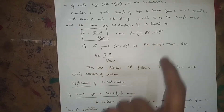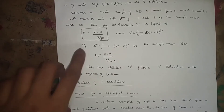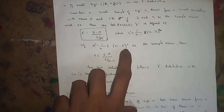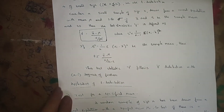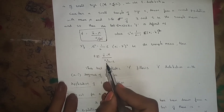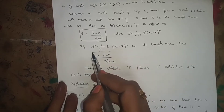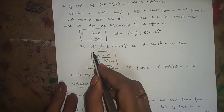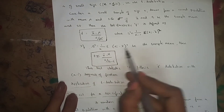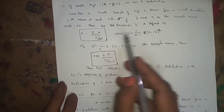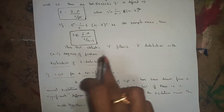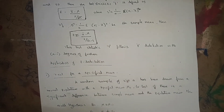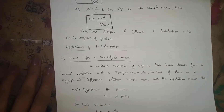If instead s² = (1/n) × Σ(xᵢ − x-bar)², then the test statistic becomes t = (x-bar − μ) / (s / √(n−1)). The test statistic t follows a t-distribution with n minus 1 degrees of freedom. The concept of degrees of freedom was explained in previous classes.